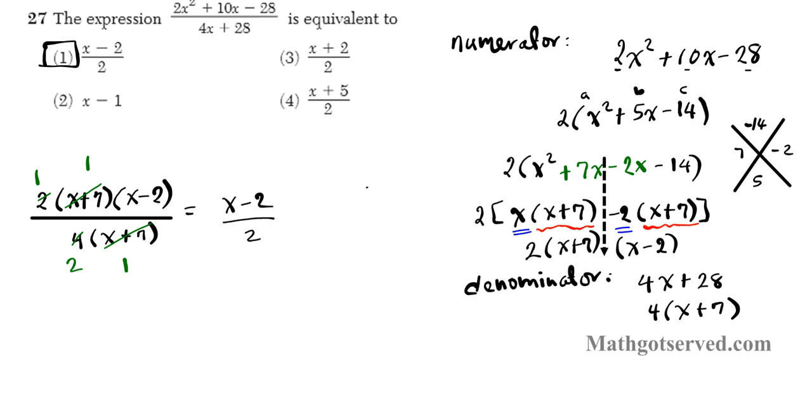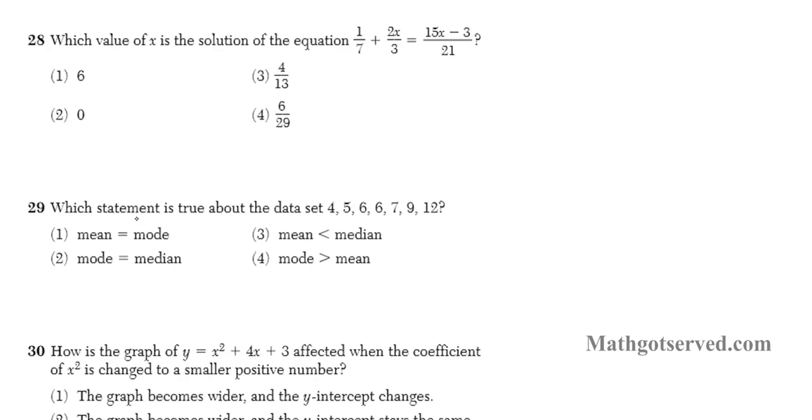So final answer is option number 1. Let's move on to question 28. It says which value of x is the solution to the equation. So we have this equation right here, 1 over 7 plus 2x over 3 equals 15x minus 3 over 21.